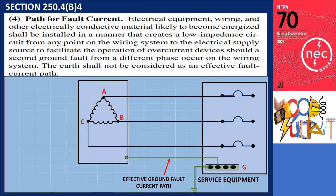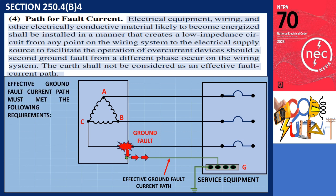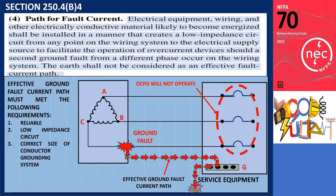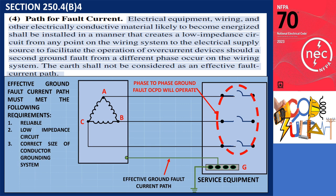Section 250.4(B)(4), Path for Fault Current: Electrical equipment, wiring, and other electrically conductive material likely to become energized shall be installed in a manner that creates a low impedance circuit from any point on the wiring system to the electrical supply source, to facilitate the operation of overcurrent devices should a second ground fault from a different phase occur on the wiring system. The earth shall not be considered as an effective fault current path. In order to achieve an effective ground fault path, certain performance requirements must be fulfilled, including a reliable, low impedance grounding circuit and correct conductor sizing. By meeting these requirements, the ground fault path can effectively enable the operation of overcurrent devices to clear fault currents. It is crucial to note that the earth itself is not an effective ground fault current path, as discussed in part one of this video.